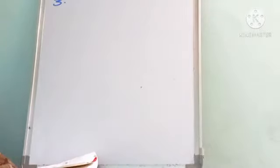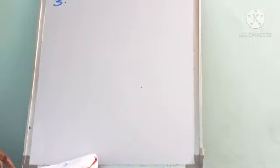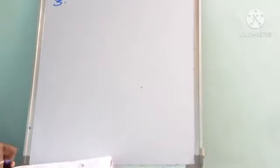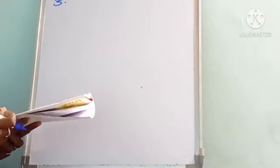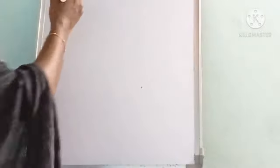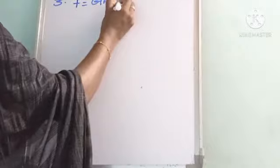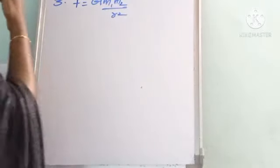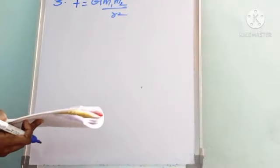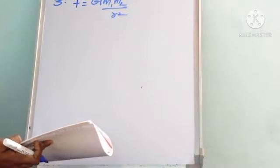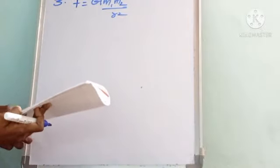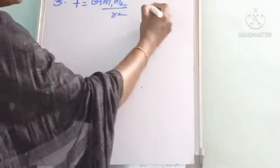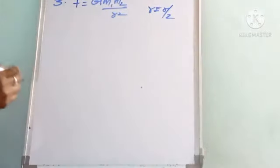Third question: the gravitational force between two bodies of masses m1 and m2 is F. What will be the force if their separation becomes half? Initially, F = G·m1·m2 / r². Now if separation becomes r/2, we need to find the new force F'.